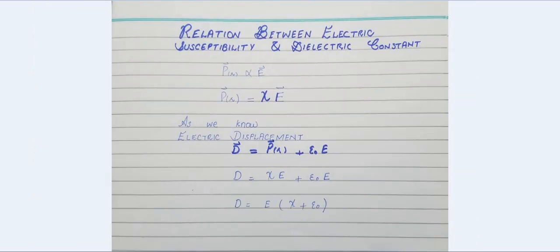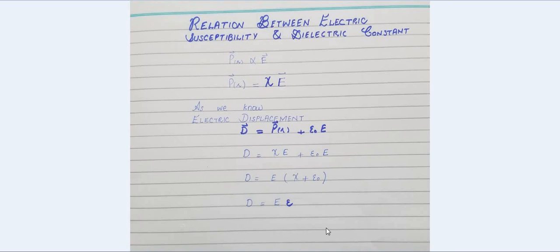Now, E can be taken out as a common factor and written outside the bracket, so we are left with D = E(χ + ε₀). Proceeding further, this quantity χ + ε₀ is actually equal to the permittivity of the material.